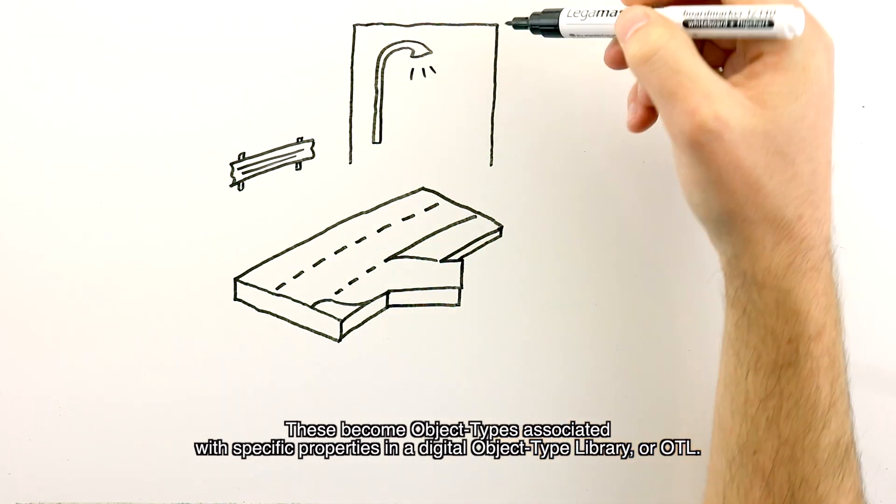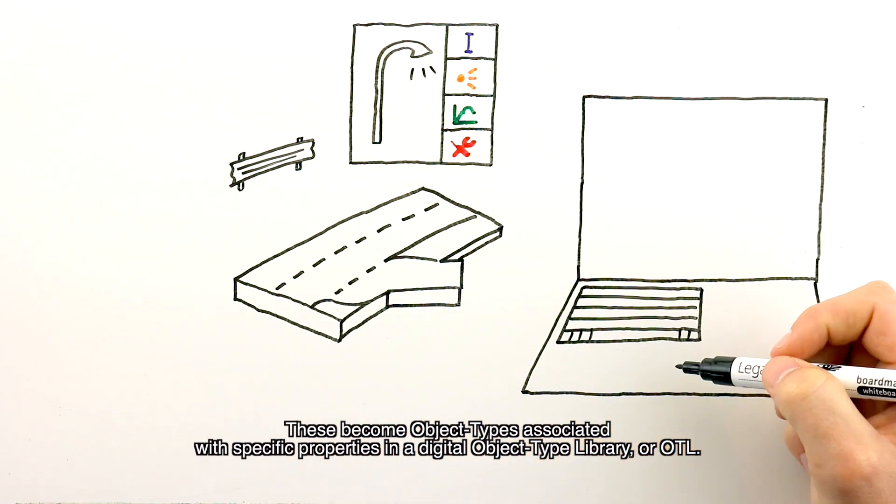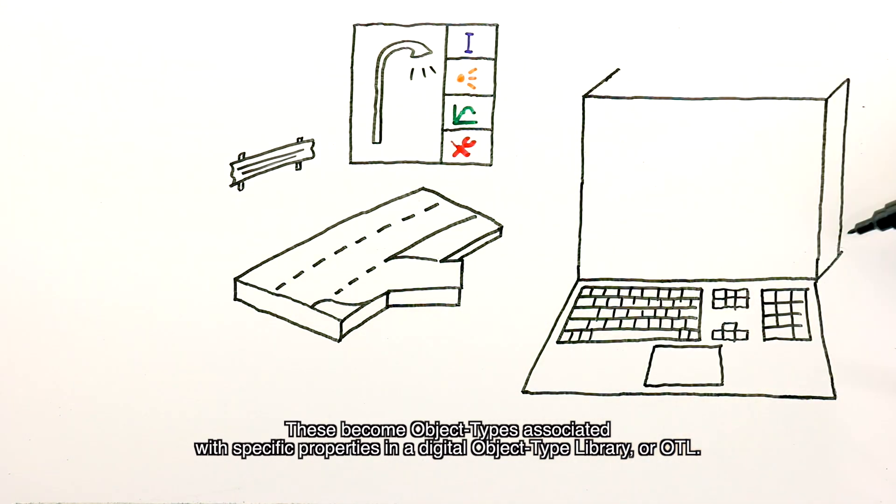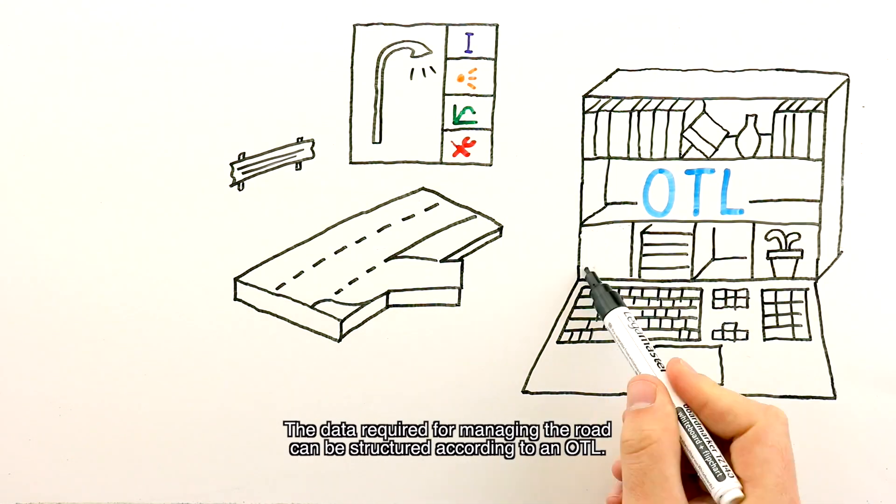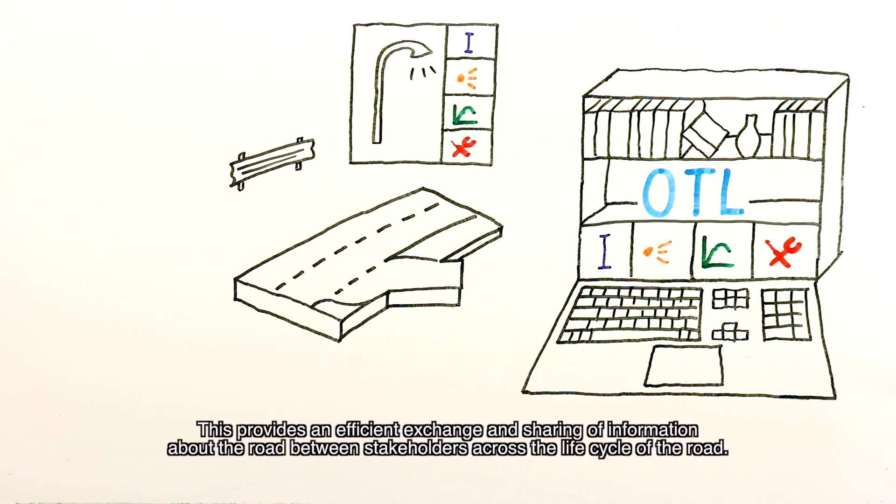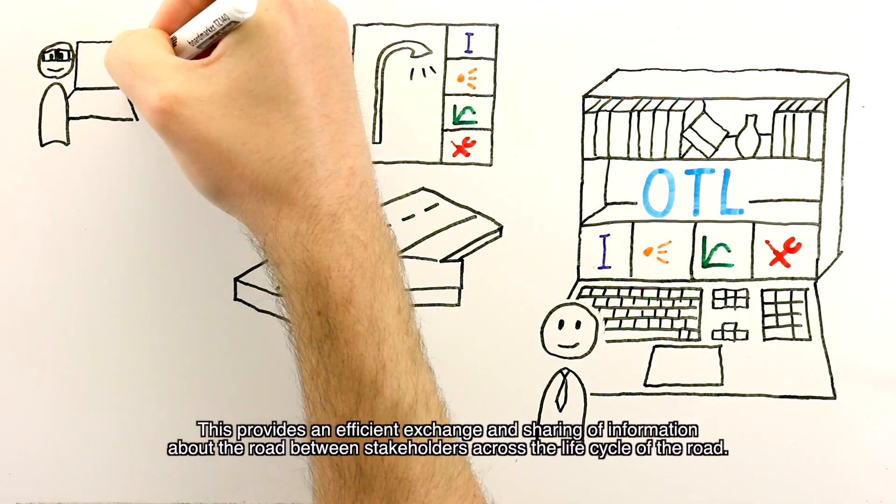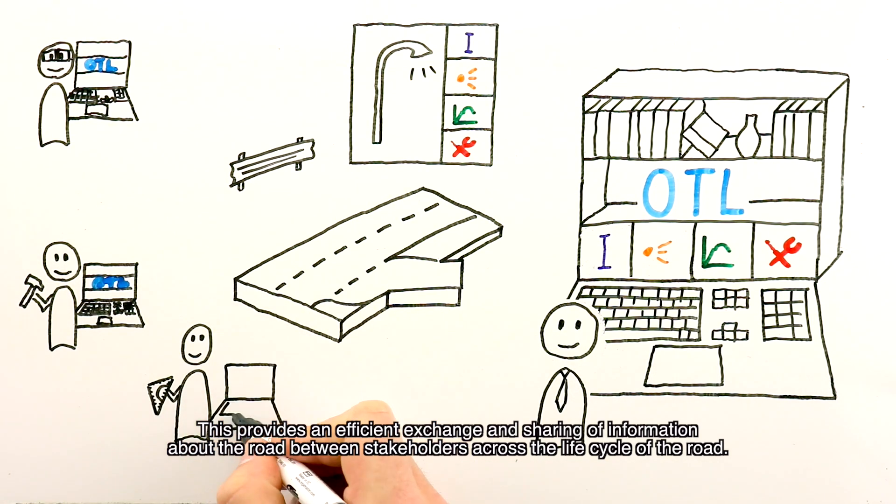These become object types associated with specific properties in a digital object type library or OTL. It provides the backbone of the digital twin of the road. The data required for managing the road can be structured according to an OTL, providing efficient exchange and sharing of information between stakeholders.